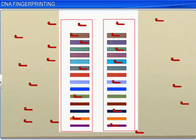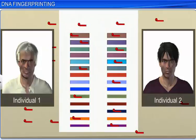These bands provide a characteristic pattern to an individual's DNA, and vary from one individual to another, except in identical or monozygotic twins.